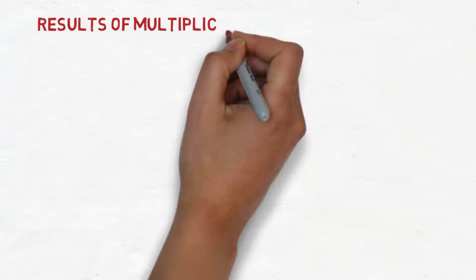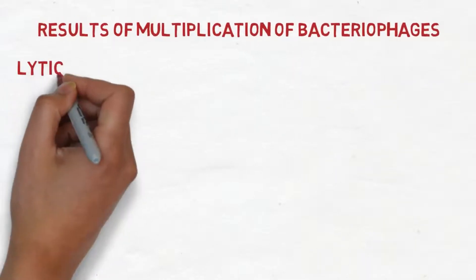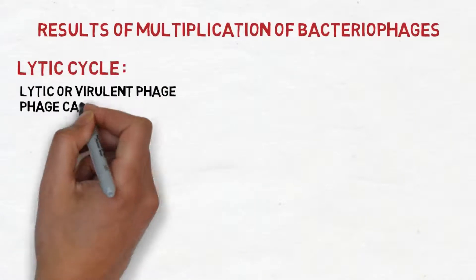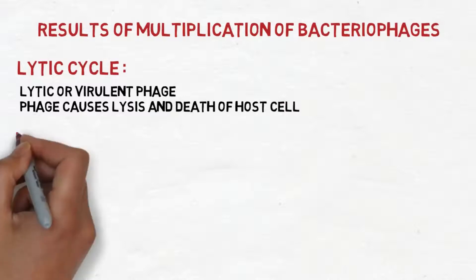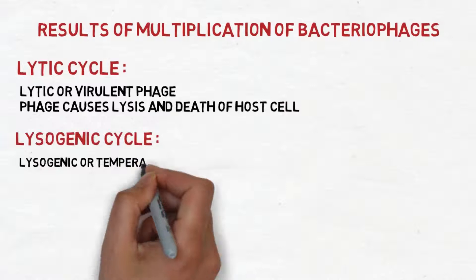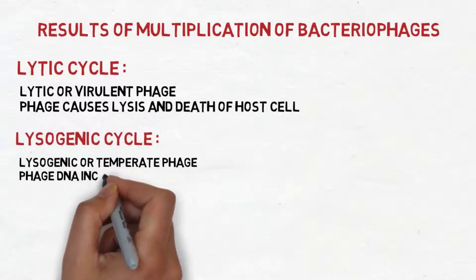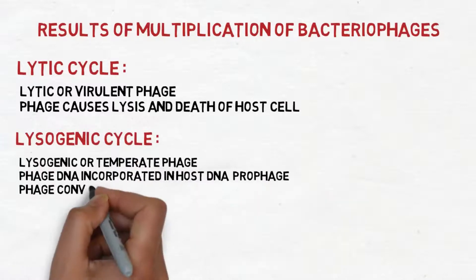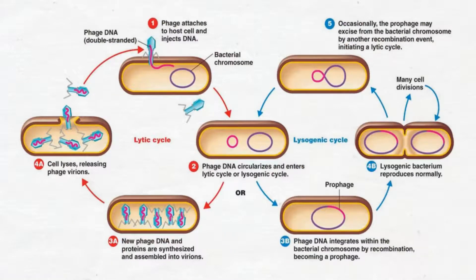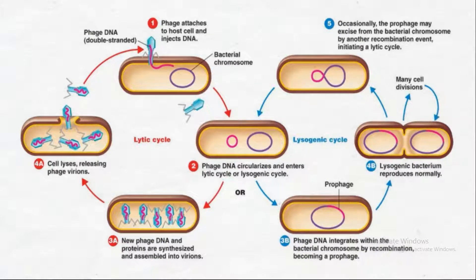Back to the results of multiplication of bacteriophages. We have two cycles: the lytic cycle and the lysogenic cycle. For the lytic or virulent phage, the phage causes lysis and death of the host cell. On the other hand, the lysogenic or temperate phage has the phage DNA incorporated into host DNA, making a prophage — in other words, phage convergence. In this picture, we see the lytic cycle on the left and the lysogenic cycle on the right. The first and second steps are common in both cycles, then the viral infection chooses one of the pathways to continue, but eventually the virus must end in the lytic cycle.